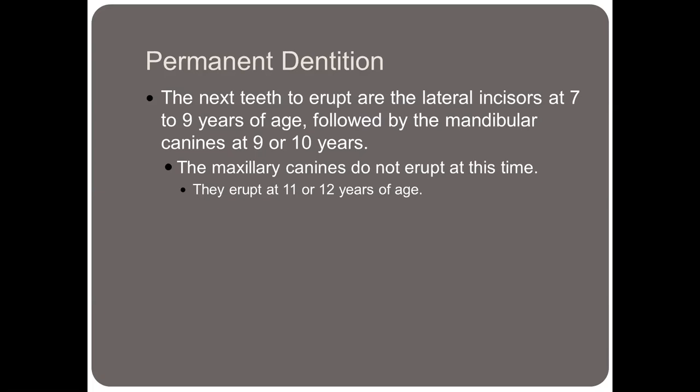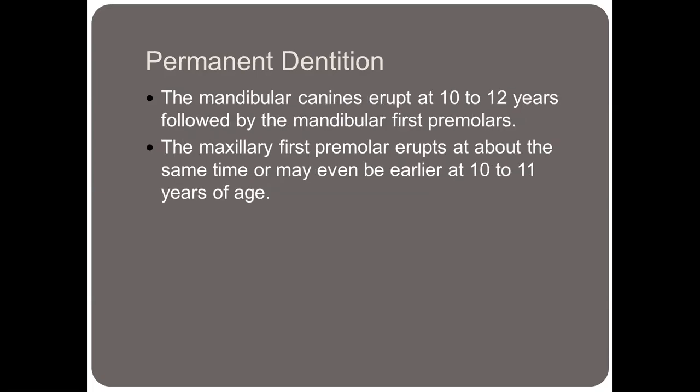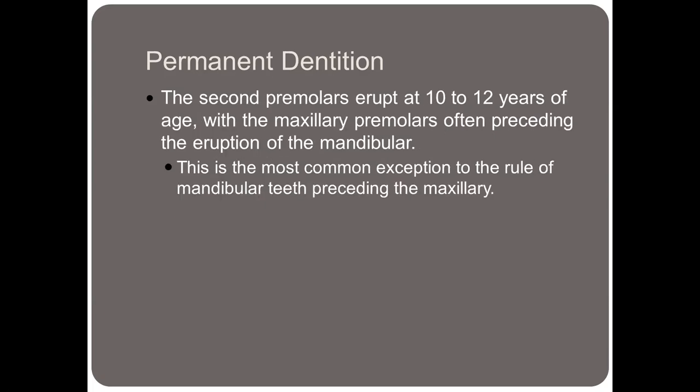The next teeth to erupt are the lateral incisors at about 7 to 9 years of age, followed by the mandibular canines at 9 to 10. The maxillary canines do not erupt at this time — they erupt at about 11 or 12 years of age. The mandibular canines then erupt at 10 to 12, followed by the mandibular first premolars, then the maxillary premolars at about the same time or even earlier. The second premolars erupt at 10 to 12 years of age, with the maxillary premolars often preceding the mandibular — this is an exception to the rule that mandibular teeth usually erupt before maxillary.